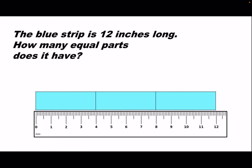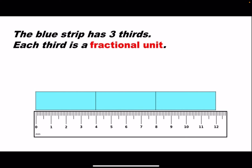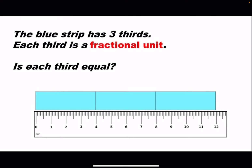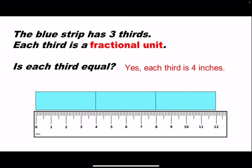The blue strip is 12 inches long. How many equal parts does it have? It has three equal parts. The blue strip has three thirds. Each third is a fractional unit. Is each third equal? Yes, each third is exactly four inches long.